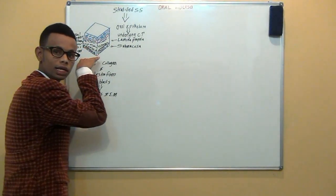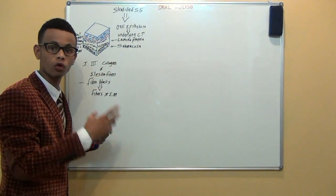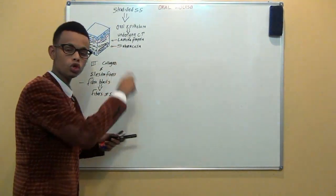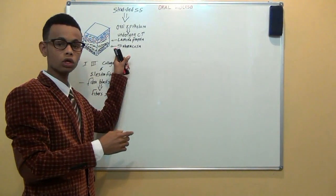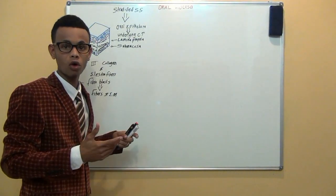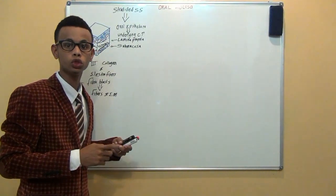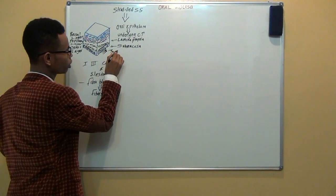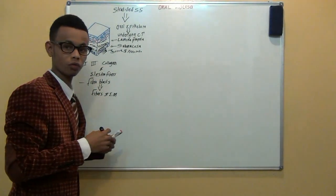Between the papillary layer and dense layer, we have capillaries which provide nutrition for the epithelial layer of the mucosa. The submucosa may or may not be present deep to the dense layer of the lamina propria. If present, the submucosa may contain connective tissue, adipose tissue, or salivary glands, as well as overlying bone or muscle.